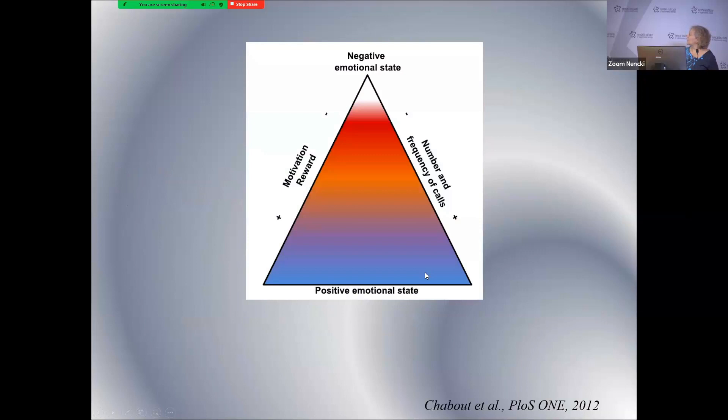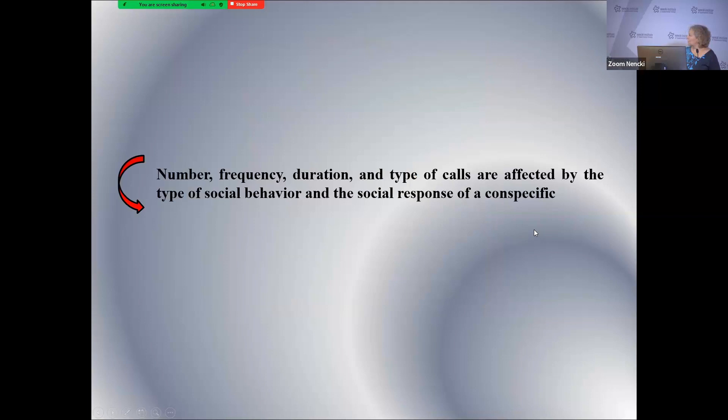This representation suggests that USVs carry some emotional content but also some motivational content, because they are definitely very different in number, frequency, and duration in animals that have been isolated and therefore have more motivation to have social contact. And I remind you that here it's male-male interactions in adults.